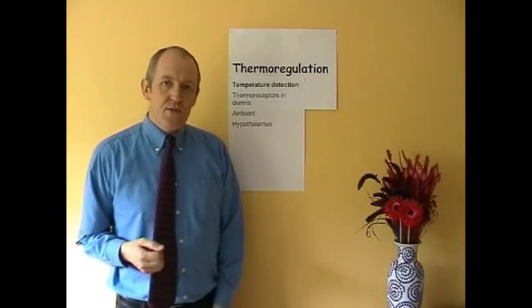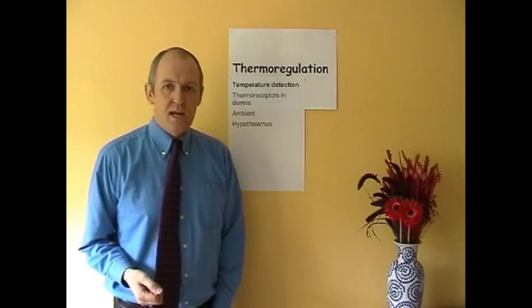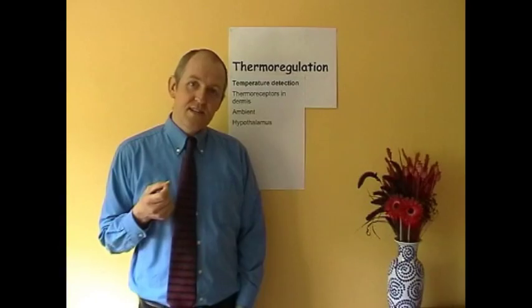I'd like us now to think about temperature detection. Now, there are thermoreceptors in the dermis, in the lower layer of the skin. And these detect the temperature of the environment. And particularly, they detect temperature change. So maybe you're trying to go swimming in a cold lake or cold water. And when you first get in, it's absolutely freezing. It feels really chillingly cold. But then once you've been in for a little while, it starts to feel really quite pleasant. This is because the thermoreceptors, the temperature receptors in the dermis, are more sensitive to change than they are to absolute temperature.